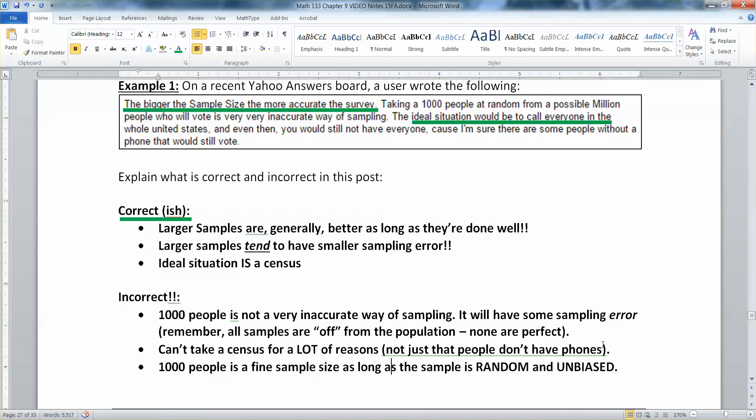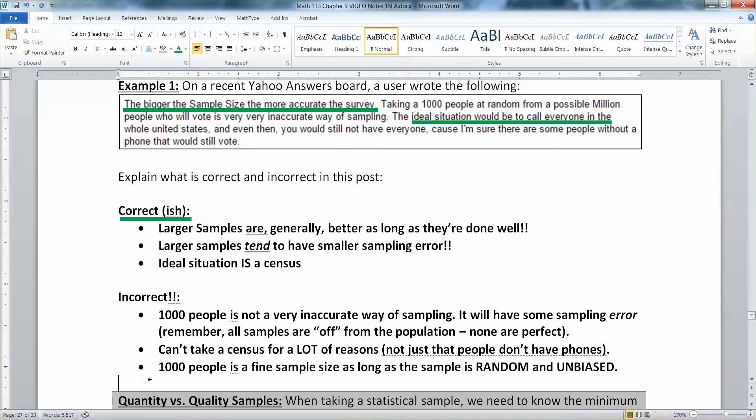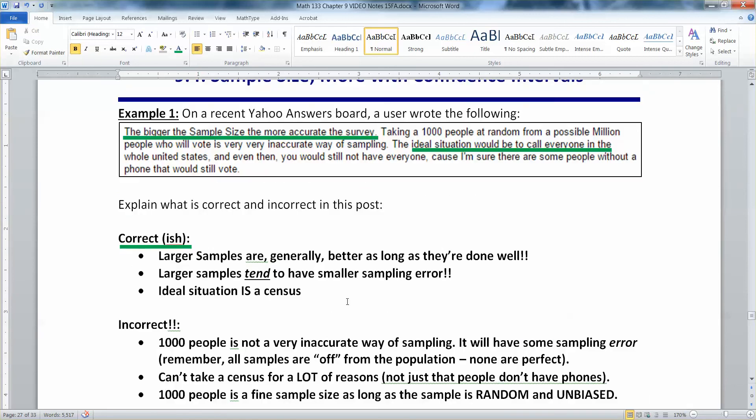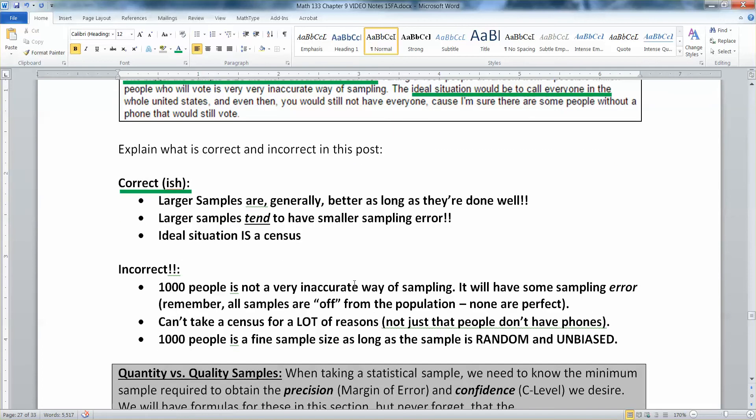For example, there's an issue with trying to get a hold of everybody just in terms of manpower. How much time are you going to spend trying to get a hold of people? You don't have the money, the resources, etc. The moral of the story is that in particular that second line, taking a survey at random from a possible million people is a very very inaccurate way of sampling, that's just not true. A thousand people is fine as long as the sample is random and unbiased. Cannot stress it enough, that is what is really important to us.